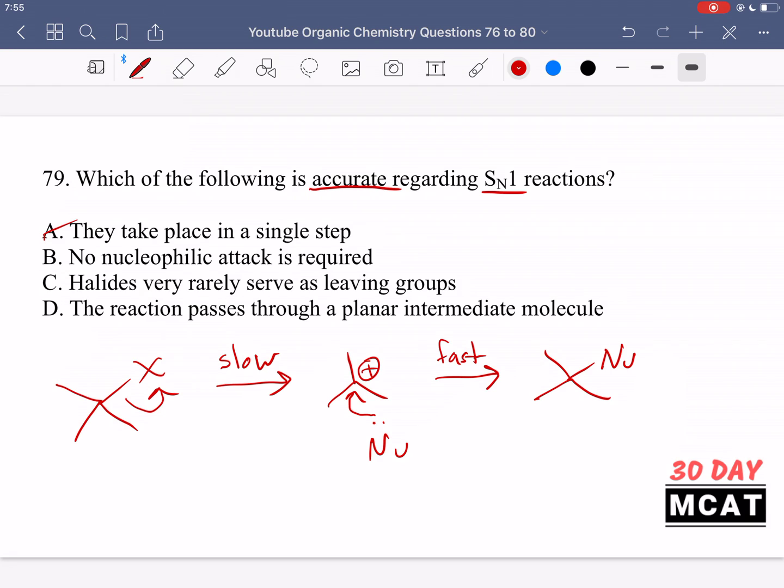Option B is saying no nucleophilic attack is required - nope, as you can see in the second step, there is attack from the nucleophile onto that carbocation. Option C is saying halides very rarely serve as leaving groups. Nope, halides are the most common type of leaving groups. They're very good leaving groups. They are often used in SN1 reactions. Finally, option D is correct.